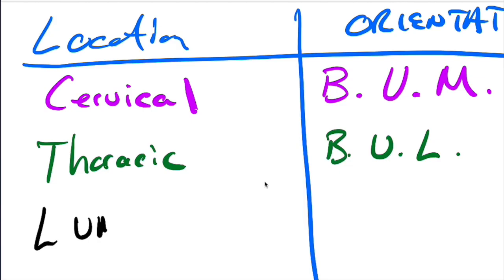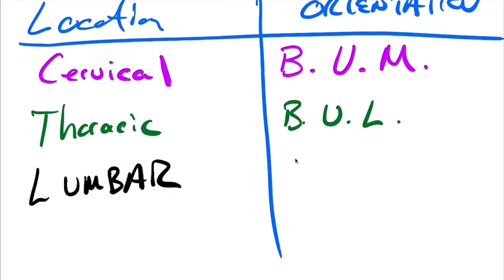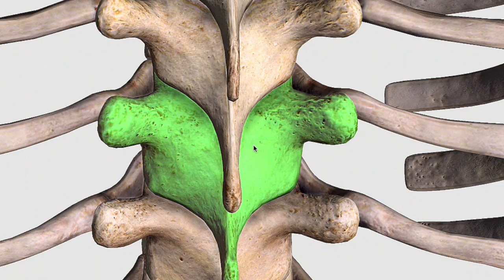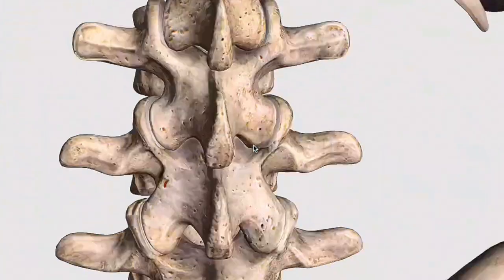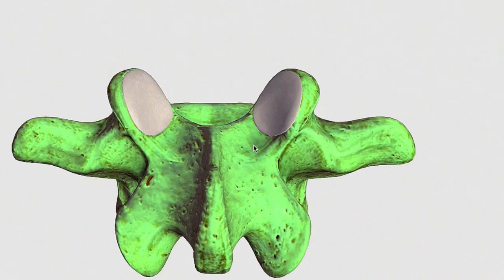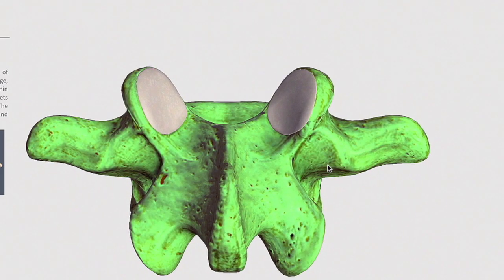Then we have the lumbar region, which is the most distinct, and has the same orientation as cervical. Usually books just say backwards and medial. If we take a look at the lumbar region, you'll notice that these facets are backwards, upwards, and medial — they're kind of angled in a medial direction.